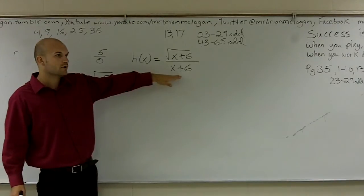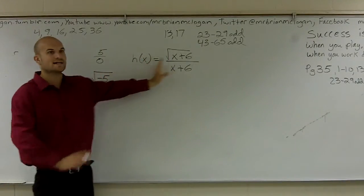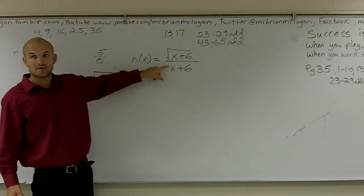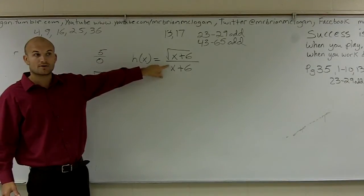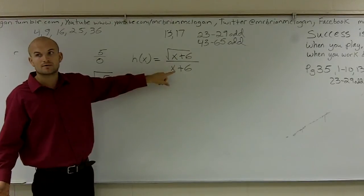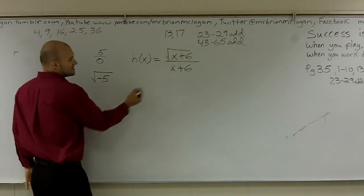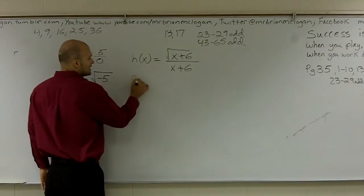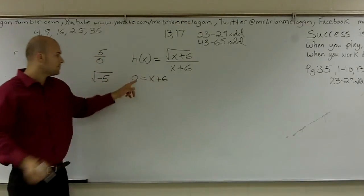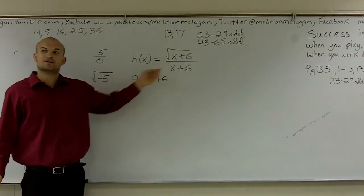So if we look on the bottom, this graph can cover all x values, but what x values is it not going to cover? Well, if this bottom becomes zero, that's not going to be a part of the graph, because we know we can't divide by zero. So when is the bottom zero? To set this up as an equation, you just write zero equals x plus six.